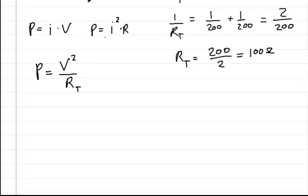I could have used either one of those, but if I use these two, I would have to solve for current. And with this formula, with just the voltage and the total resistance, I don't need to do that. So it just simplifies it.